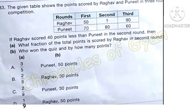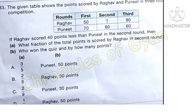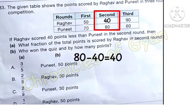Question 33: the given table shows points scored by Raghav and Puneet in a 3-round competition. Question A: what fraction of the total points is scored by Raghav in the 2nd round? Raghav's 2nd round score has a question mark. We're told Raghav scored 40 points less than Puneet in the 2nd round. Puneet scored 80 in the 2nd round, so Raghav scored 80 minus 40 = 40 points.